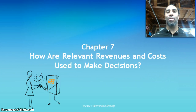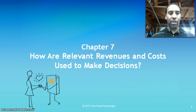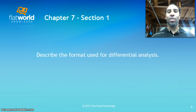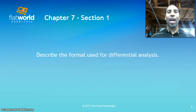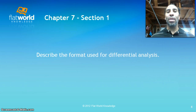Every single chapter, managerial accounting is all about making decisions or gathering appropriate financial information in order to make decisions. So you want to describe the format used for differential analysis. When you look at a differential analysis you have option A and option B — what are the different revenues and costs that would change if I choose one over the other? We will run into scenarios where certain fixed costs are not allocated costs that will stay there no matter what we do.